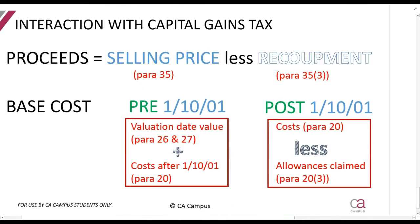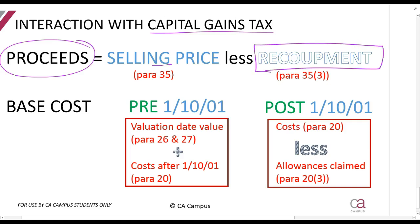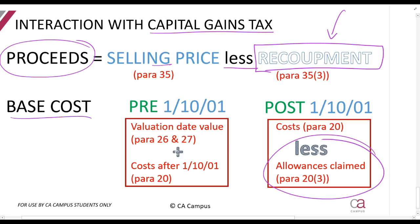This is a reminder about how recoupments interact with capital gains tax. When calculating CGT proceeds, you say selling price less recoupment — because that part of the selling price has already been taxed. The same reason we deduct the recoupment is why we deduct the allowances claimed from the base cost of the asset, if the asset was acquired after 1 October 2001.